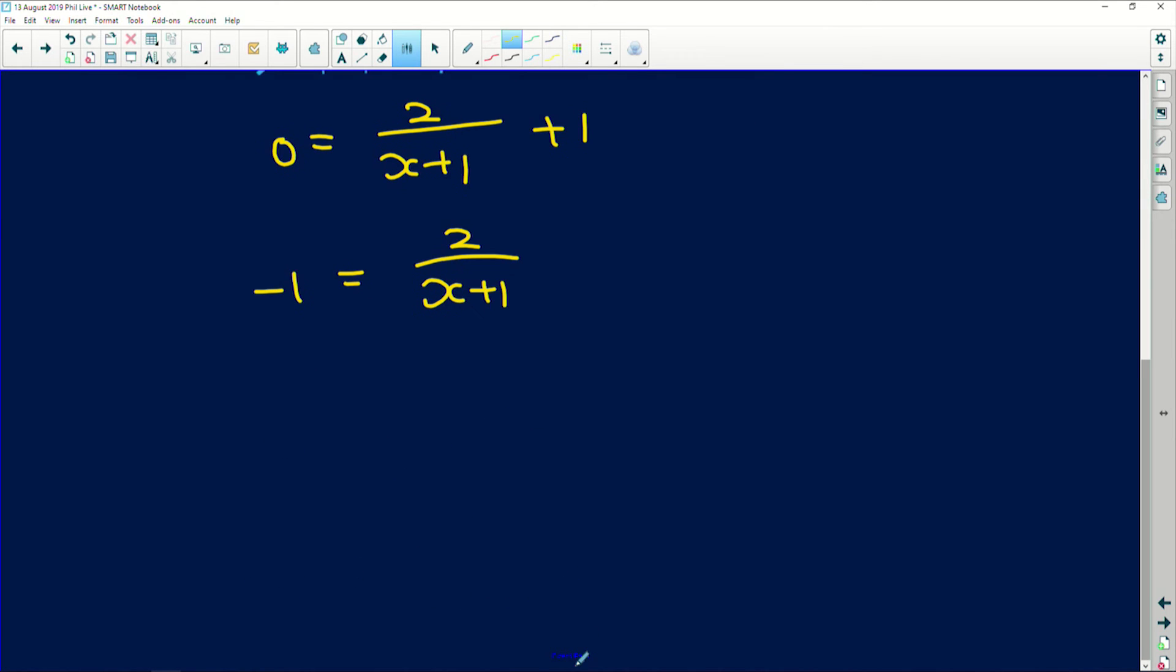Now we can multiply out by the denominator. So negative 1 multiplied by x is negative x, negative 1 multiplied by 1 is negative 1, and that gives us 2. If we add 1 to both sides, we're going to get that negative x equals 3, which means that x equals negative 3.